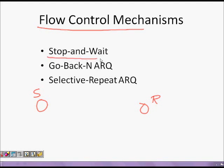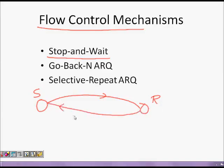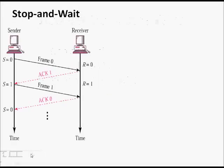One of the simplest mechanisms for flow control is stop-and-wait, where the sender sends some data, then the receiver processes it and sends an acknowledgement saying you can send more data. This is the mechanism we will look at now.